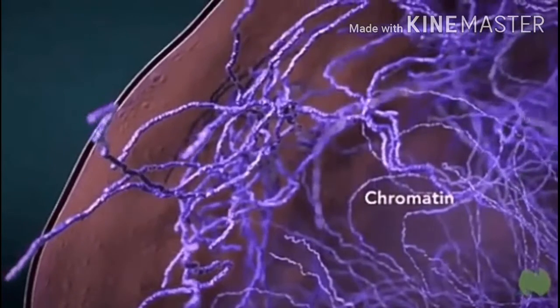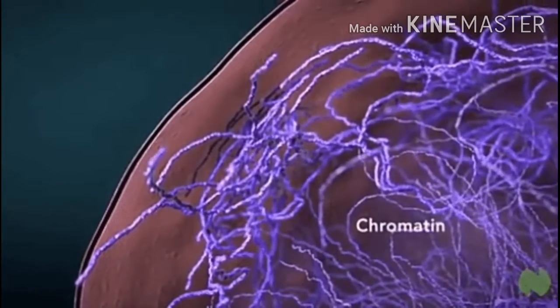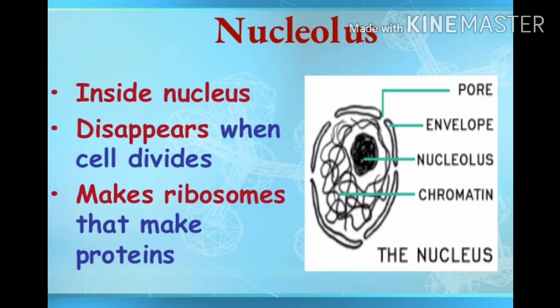The nuclear membrane is porous and allows the movement of substances between the cytoplasm and the nucleus. A small spherical structure present inside the nucleus, called nucleolus, plays an important role in protein synthesis.